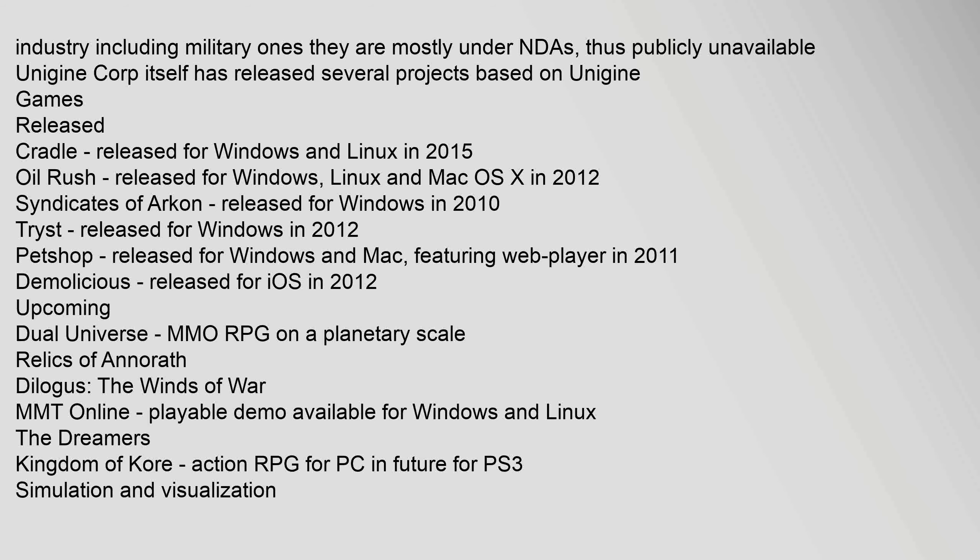There are currently 100 licensees of Unigine, many from the VR and simulation industry including military ones, and most are under NDAs. Unigine Corp itself has released several projects. Games released include: Cradle (Windows and Linux, 2015), Oil Rush (Windows, Linux, and Mac OS X, 2012), Syndicates of Archon (Windows, 2010), Trist (Windows, 2012), Pet Shop (Windows and Mac with Web Player, 2011), and Demolicious (iOS, 2012).